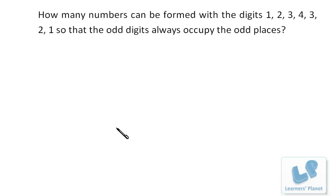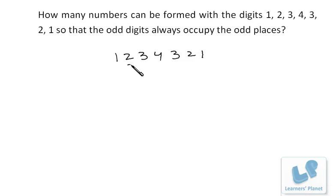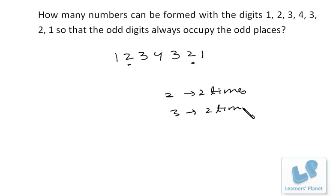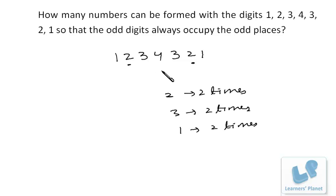Let's see this question: how many numbers can be formed with the digits 1, 2, 3, 4, 3, 2, 1 so that the odd digits always occupy the odd places? First of all, how many digits do we have? It's 1, 2, 3, 4, 3, 2, 1. Now 2 appears 2 times, 3 appears 2 times, 1 appears 2 times, and 4 appears 1 time — so we have 7 digits in total.